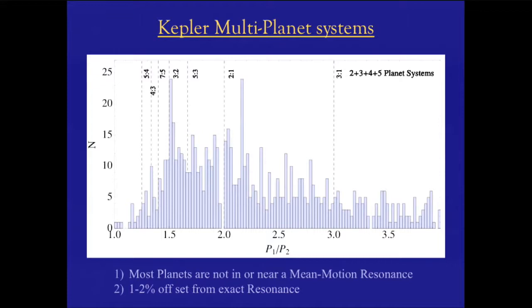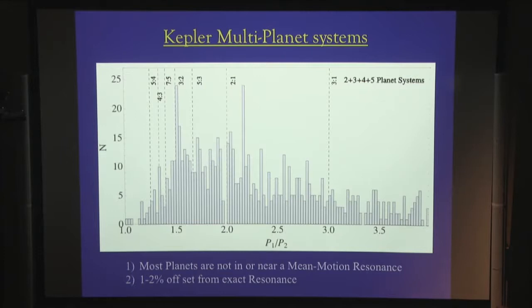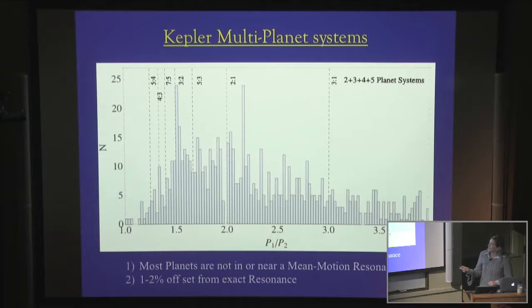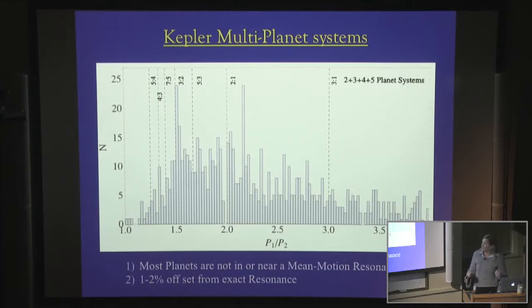However, for a small fraction of planets — maybe 10% or so — they do seem to know about these mean motion resonances, like, for example, the 3:2. And then just short of the 2:1, there seems to be a big deficit. About 10% of planet pairs seem to have some memory of those resonances and are in or close to them, although their period ratios are slightly larger than the exact resonance. What do these two clues tell us about formation? What can we learn from that?